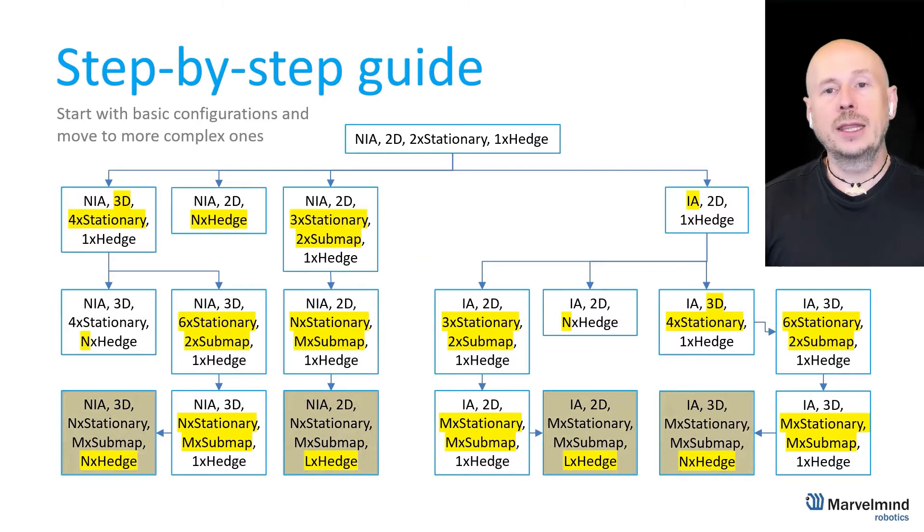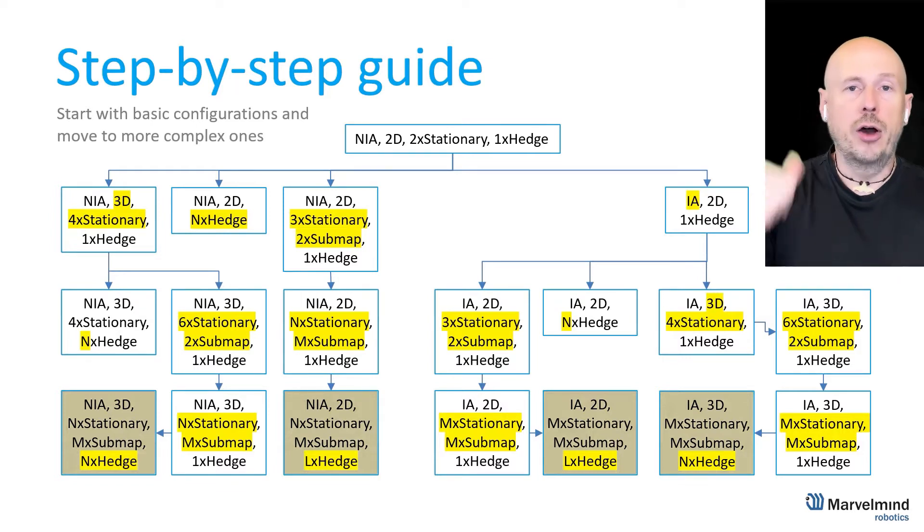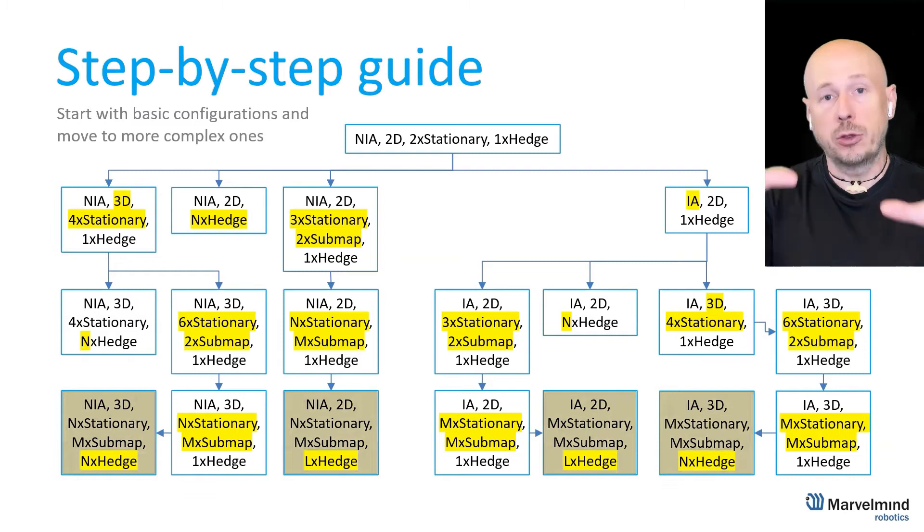So instead of, for example, one sub-map in 2D you make one sub map but in 3D because eventually you need to build 3D submaps. That's great. So once again remember you do not change multiple things at the same time. You change only one thing. Inverse architecture is already there. One mobile beacon one hedge is still there. What do you change? You change from 2D to 3D. Of course it immediately brings instead of two station beacons four stationary beacons and of course all of them must have different ultrasound frequency.